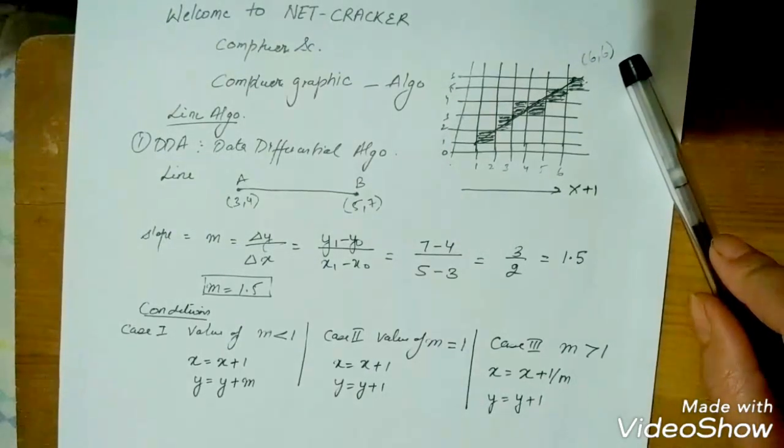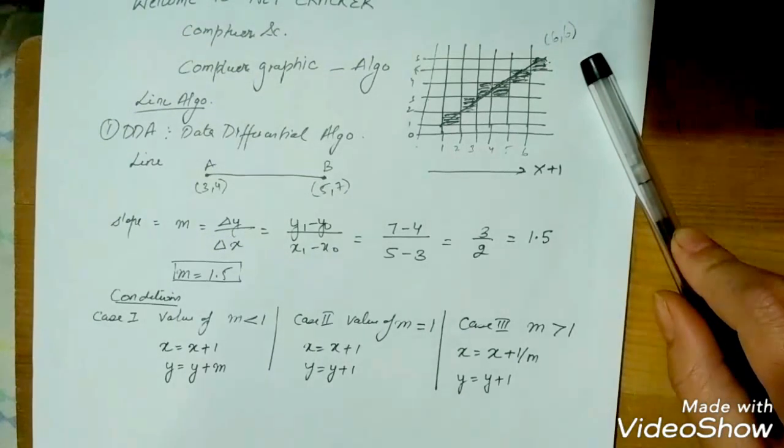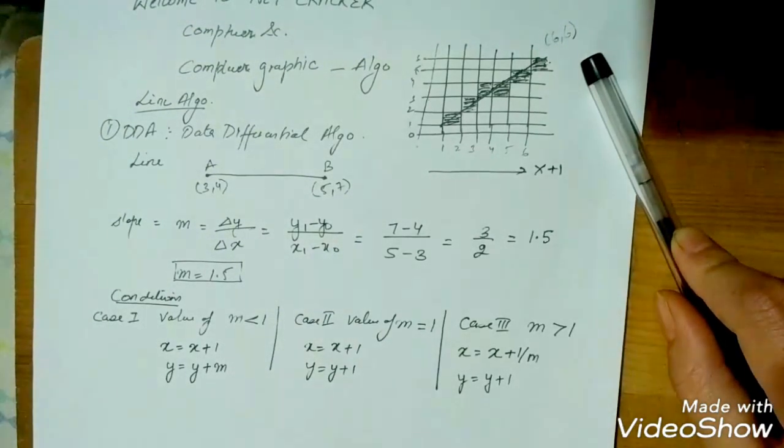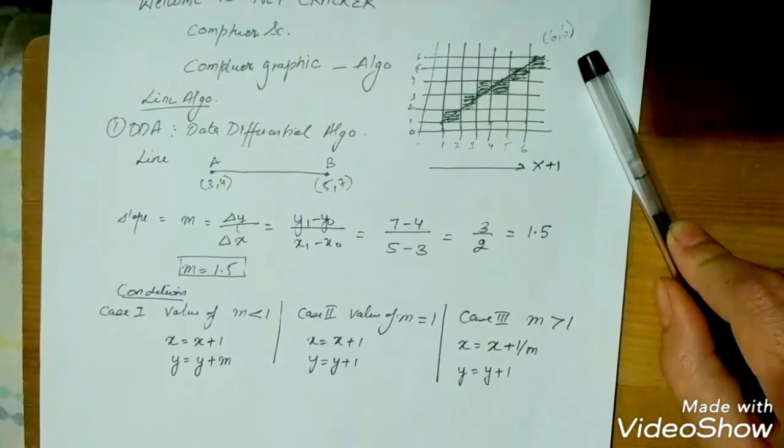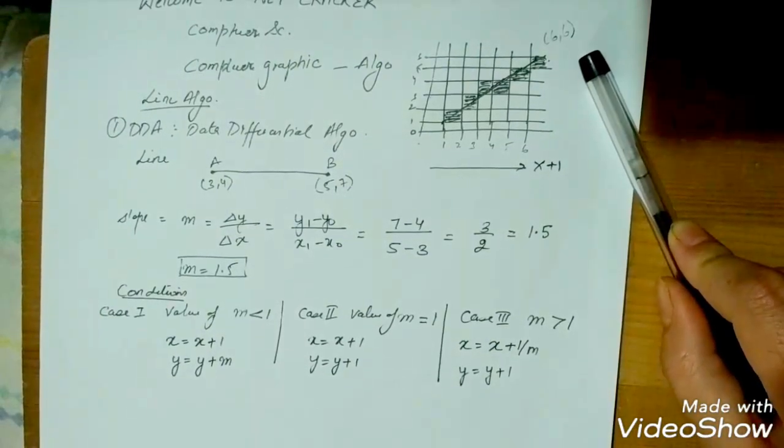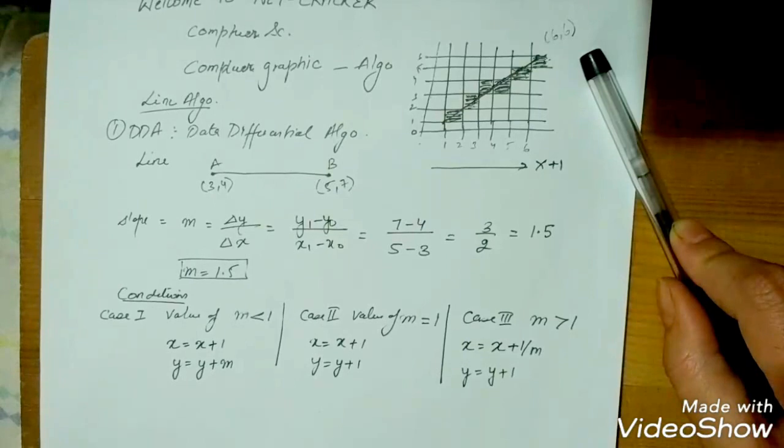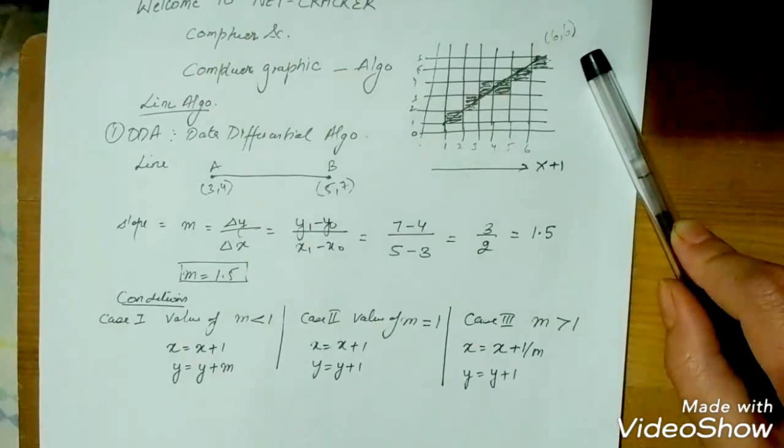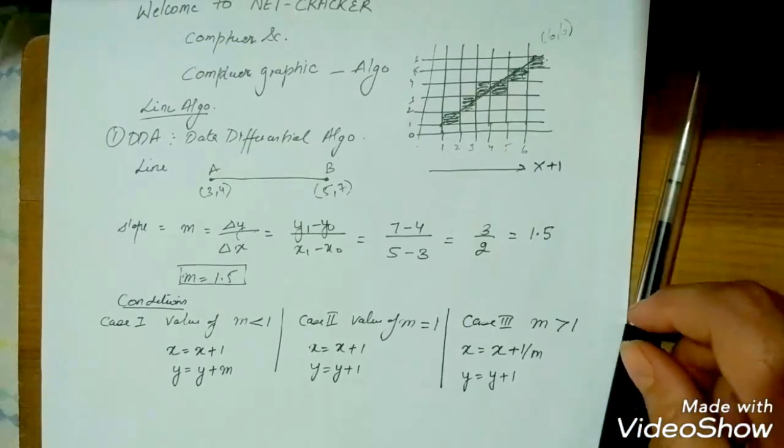We need to remember what happens when the value of m is less than 1, equal to 1, or greater than 1. On this concept, we are going to take one question in the next video. For now, just remember these three cases of slope. Thank you.